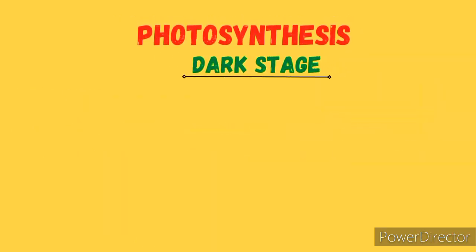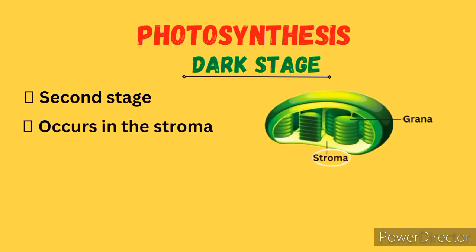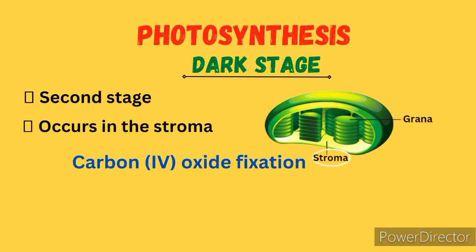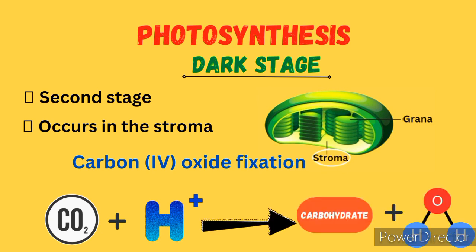Now let's proceed to the second stage of photosynthesis: the dark stage. This occurs in the stroma of the chloroplast. The main process that occurs in the dark stage is carbon dioxide fixation. In this process, carbon dioxide gas combines with hydrogen atoms from the light stage to form a simple carbohydrate such as glucose and water. The energy for this reaction is provided by ATP from the light stage.